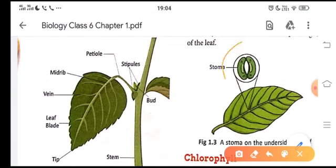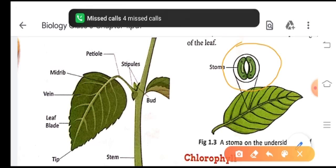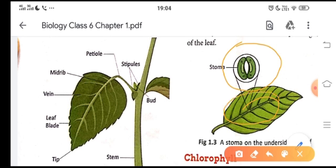Children, stomata are the minute pores present on the surface of leaf. As you see children, they are bean shaped or you can say kidney shaped. These are minute openings which are present on the surface of leaf. They are very small. We cannot see them with our naked eyes. They can be seen under the microscope.